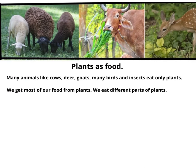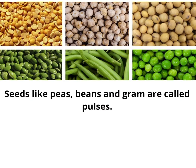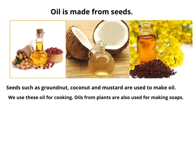Plants as food: We get most of our food from plants. We eat different parts of plants. Rice, wheat and maize are seeds called cereals. Seeds like peas, beans and gram are called pulses. Groundnuts, walnuts and cashew nuts are also seeds.